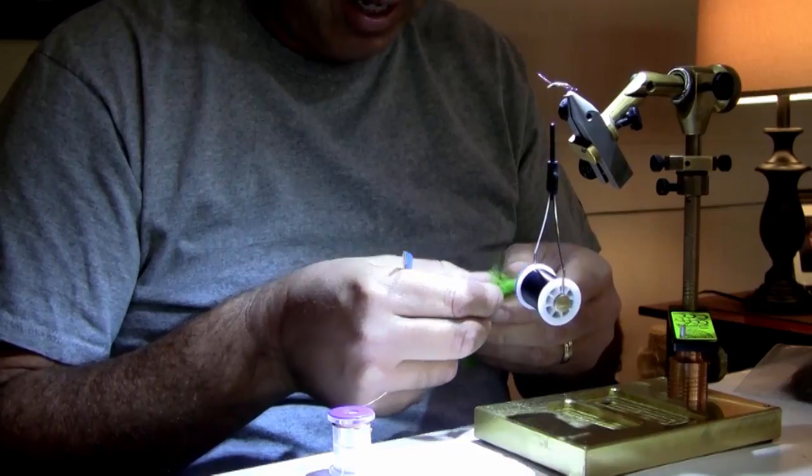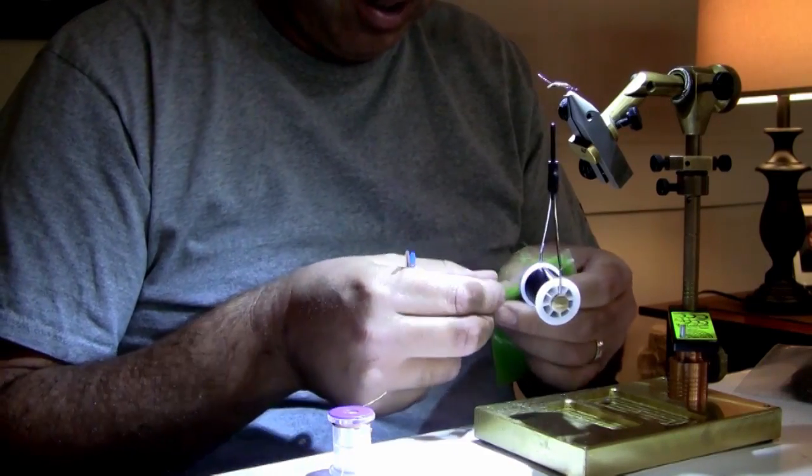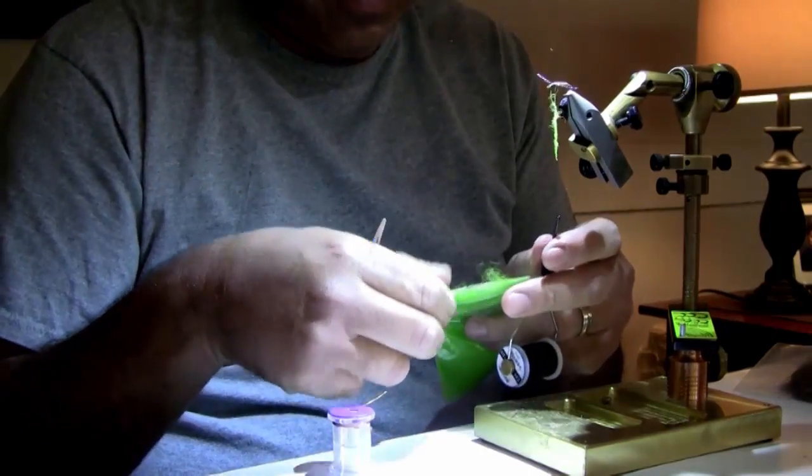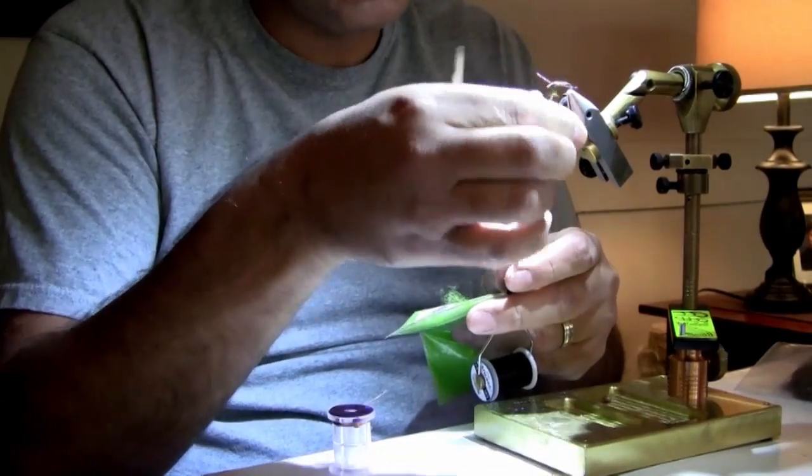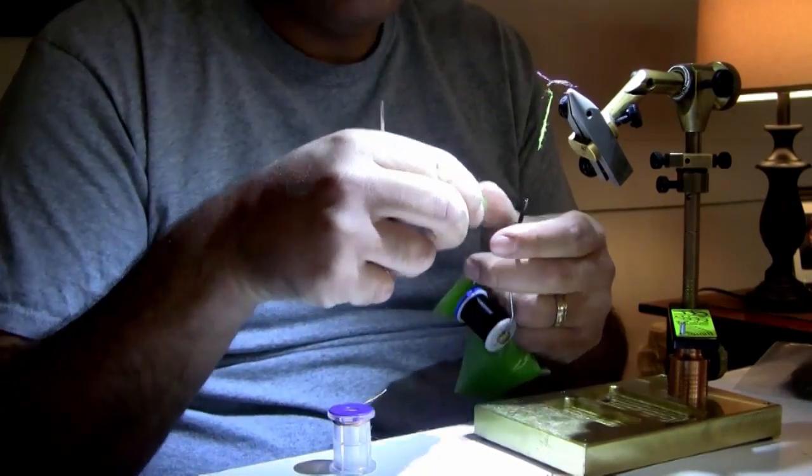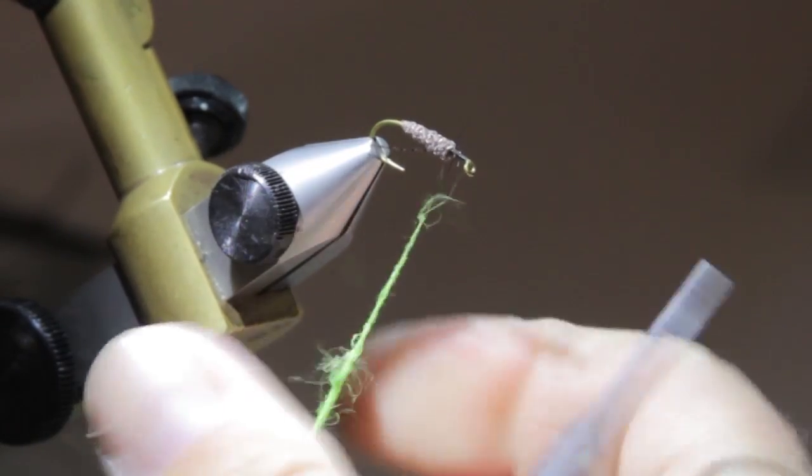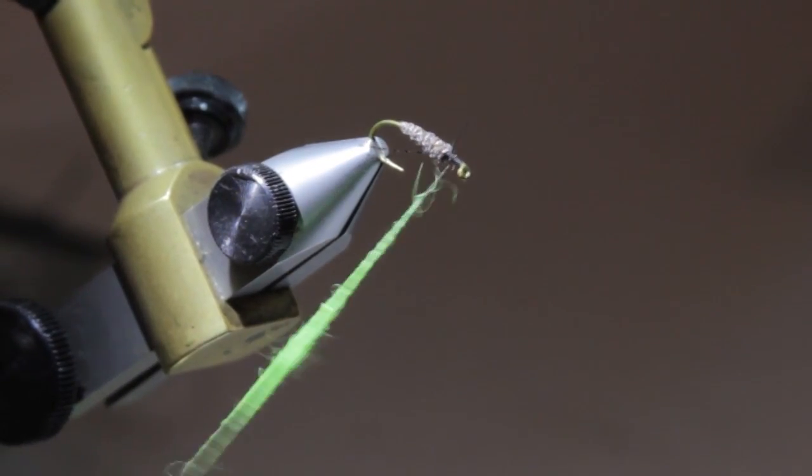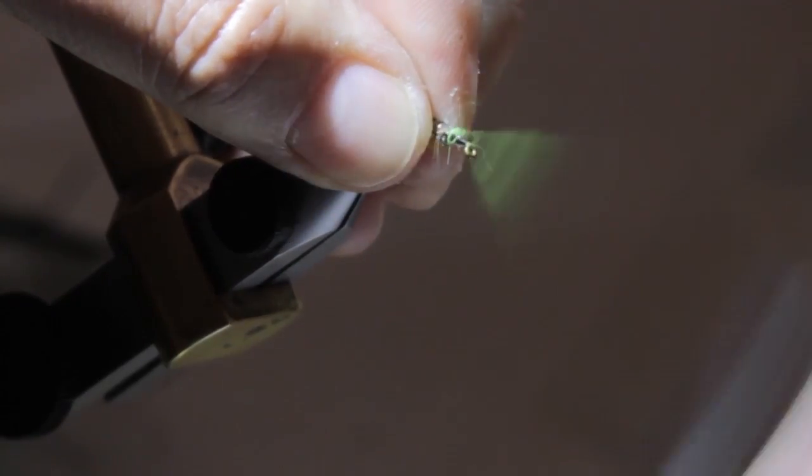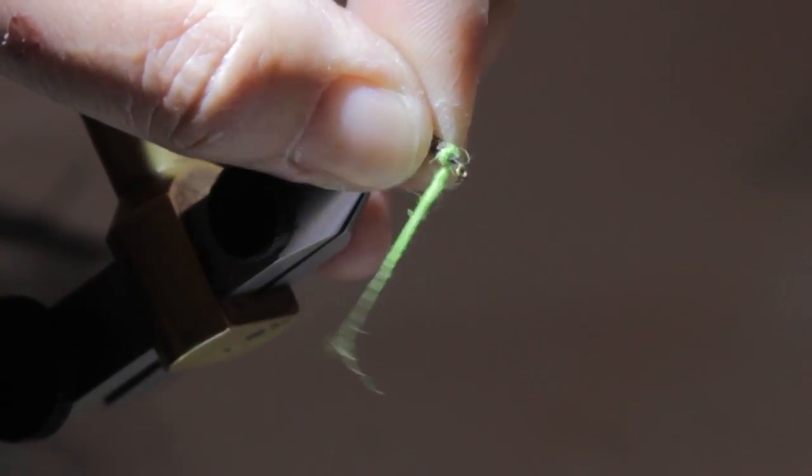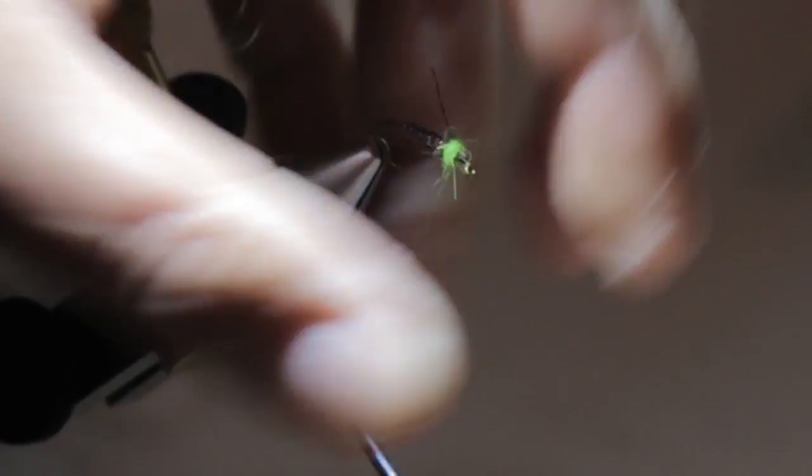We have hairline insect green. This is just hairline dubbing, good old rabbit. I want to create that little green spot. I'll just take this and wedge it right up against those legs so we get them to splay. Just kind of build a little ball right in there.